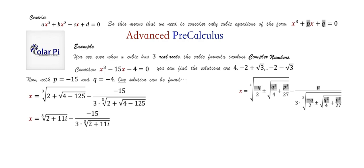Here I use a nice observation: notice that (2 + i)³ = 2 + 11i. So one cube root of (2 + 11i) is simply (2 + i), since cubing (2 + i) gives exactly 2 + 11i.